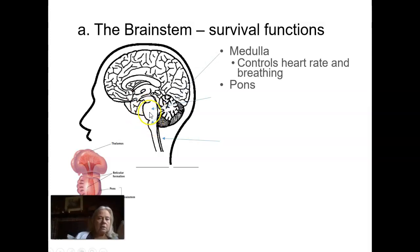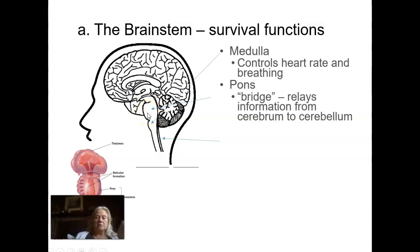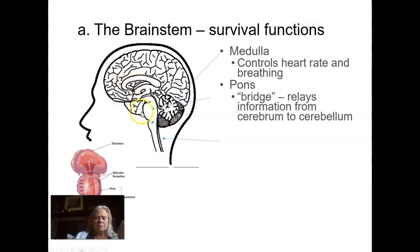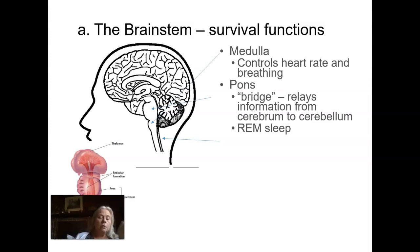Just sitting above the medulla is a fairly large bulge called the pons — that word means bridge. It relays information from the cerebellum to the cerebrum and back, so it's sort of a messenger. It also paralyzes your muscles during REM sleep, which is when we generally dream. It's important that you don't move around during REM sleep because you could hurt somebody, or yourself, since dreams can be pretty active.